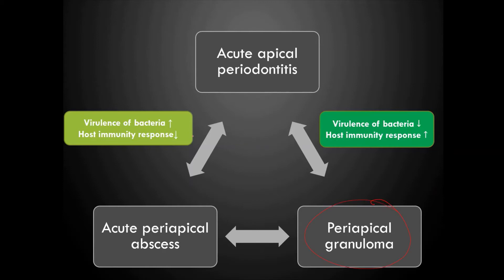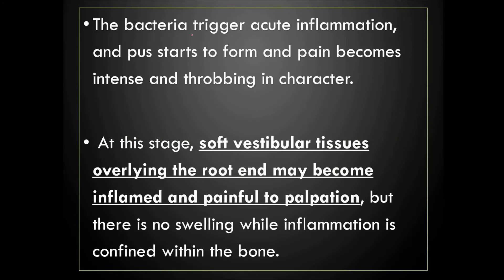From acute apical periodontitis, the condition may progress to acute periapical abscess or periapical granuloma based on the virulence of bacteria and host immunity response. If virulence is high and host immunity is low, the condition progresses into acute periapical abscess. If virulence is low and host immunity is more, the condition progresses into chronic apical periodontitis or periapical granuloma.